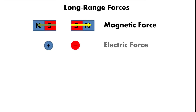The next long-range force is the electric force, acting on charges. We have positive charges — objects with fewer electrons — and negative charges — objects with more electrons. Charges can also experience attraction or repulsion. Since we have a positive and negative charge, the interaction is attraction: the positive charge pulls the negative charge toward it, so the force on the negative charge points to the left. At the same time, the negative charge attracts the positive charge. The magnitudes of these forces are equal but opposite in direction.